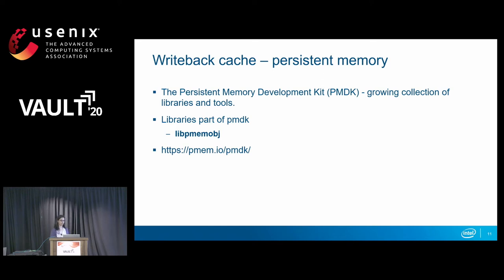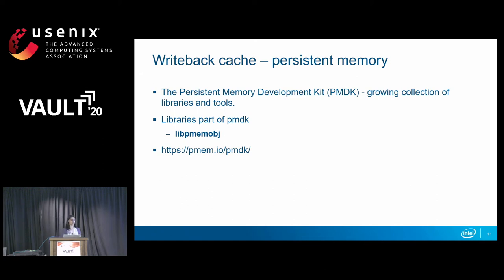We have implemented the persistent memory cache using a set of libraries that are part of the Persistent Memory Development Kit (PMDK), which is an ever-growing collection of libraries and tools validated and tuned on both Linux and Windows. Specifically, we use libpmemobj for the replicated write log implementation — it helps with atomic transactions. More information about these libraries can be found at pmdk.io. There's also a small tutorial showing how to emulate persistent memory using a portion of DRAM so you can try and test these libraries.